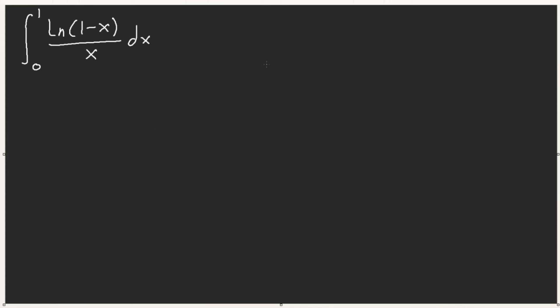Of course, this function is not integrable, but with definite bounds there is a nice value for solving this. I'll give you the formula — we have a Taylor series for ln of 1 minus x. And that is negative the sum from n equals 1 to infinity of x to the power of n over n. This is our Taylor series for ln of 1 minus x. We can now plug this into the integral.